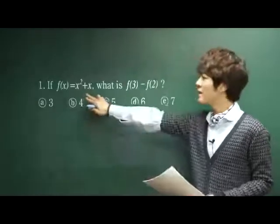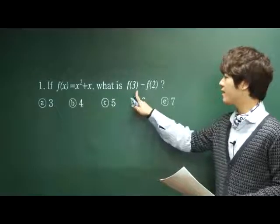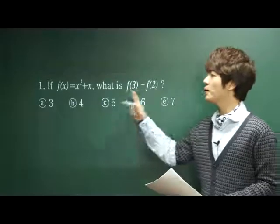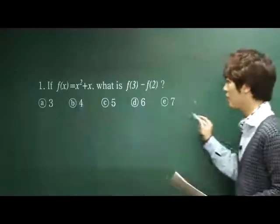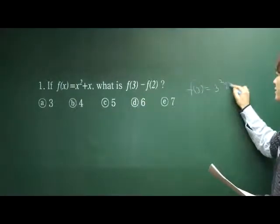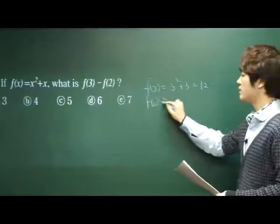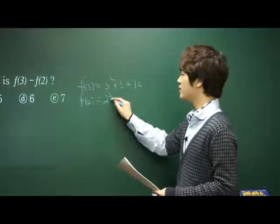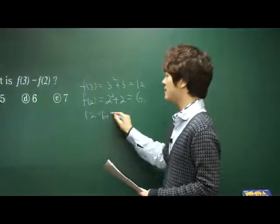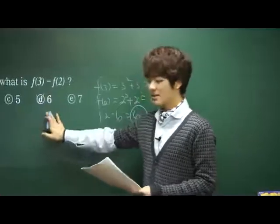Number 1: if the function f(x) equals x squared plus x, what is f(3) minus f(2)? You should put 3 in place of x, then put 2 in place of x. f(3) equals 3 squared plus 3, which is 12. When you put 2 in place of x, you get 2 squared plus 2, which equals 6. Therefore, 12 minus 6 is 6, so the answer is D, 6.